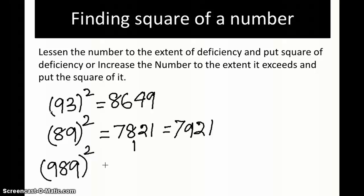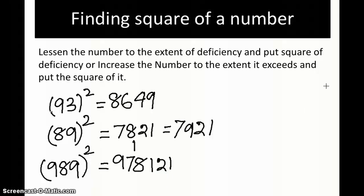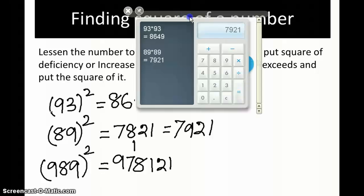In this case, our base is 1000. How much less is 989 from 1000? That is 11. So lessen it again by 11: that gives 978. Then put the square of the deficiency — 11 squared is 121. Since our base is 1000, we can keep three digits here. The answer is 978121. Let's check out.